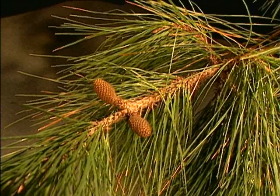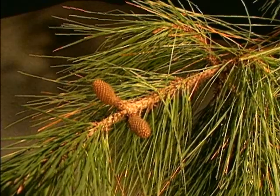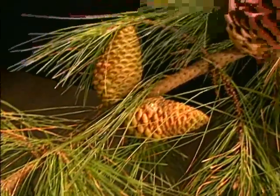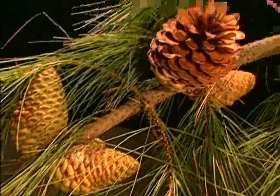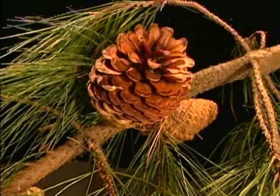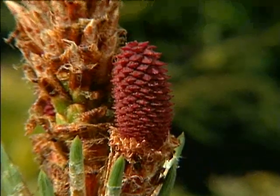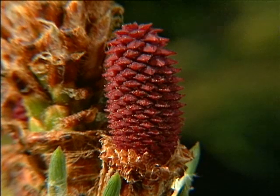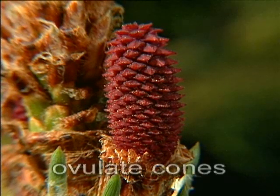Seeds play an important role in the reproduction of pine, and we know that they are released from large, woody cones. However, when these cones first appear in the springtime, they are small and fleshy. At this stage they contain ovules and are called ovulate cones.